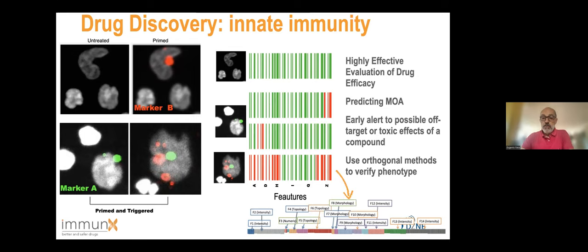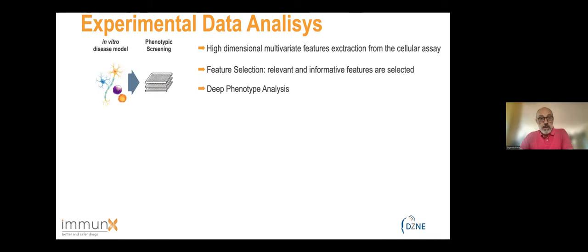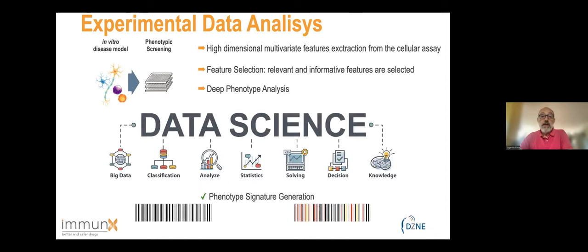The features describe many parameters we can extract from images, like intensity, topology, morphology, and texture of different markers. This is a very long vector used in analysis to generate highly effective evaluation of our drugs, to predict the mechanism of action, and to de-risk the drug from the very beginning. Practically what we have is high-dimensional multivariate feature extraction. We do feature selection in data analysis, then deep phenotype analysis — all done with what we call data science: very large datasets, classification, and machine learning.